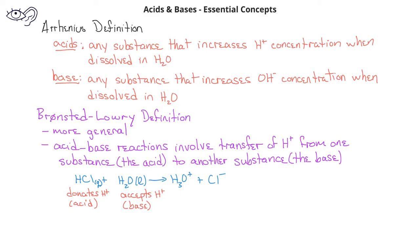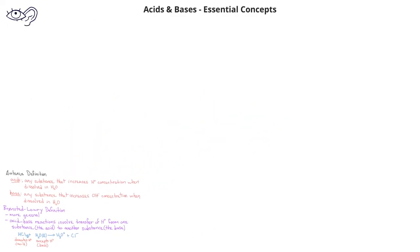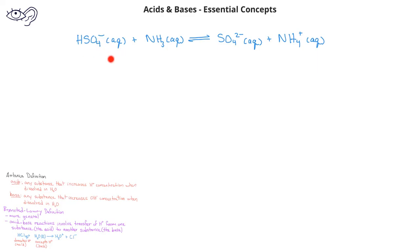Let's look at another example. We could have HSO4- in aqueous form reacting with NH3 in aqueous form, and those are in equilibrium with the sulfate ion and the ammonium ion. In this case, we see that the HSO4 is donating a hydrogen because on the product side we only have SO42-, therefore the HSO4 acts like an acid.